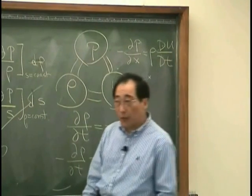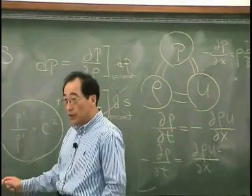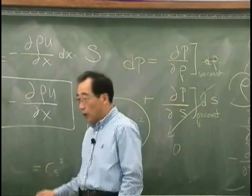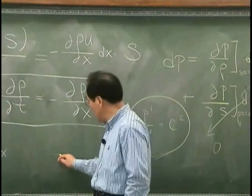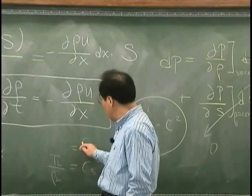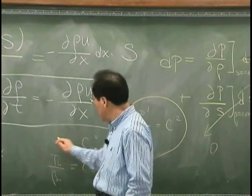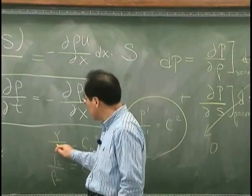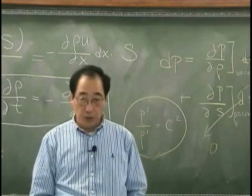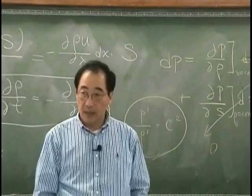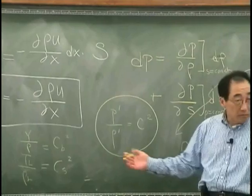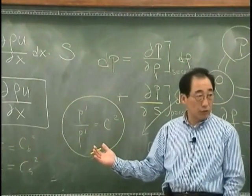For one dimensional string, the speed of wave propagation in one dimensional string was proportional to T over rho L. And for the bar, that is Young's modulus divided by rho, that's what we found. For acoustic wave, this is what we found. How do we find this? That's a good question.